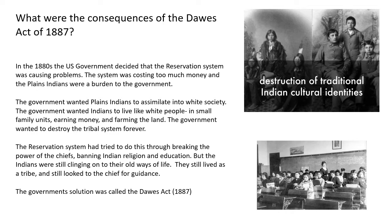But the Indians were still clinging on to their own way of life. They still lived as a tribe and still looked to the chief for guidance. So the reservation system was costing too much money and wasn't achieving its stated aim — that is, to assimilate the Native Americans into white culture and get rid of them as a problem forever. They were no longer a nation within; they were just assimilated into white society and became US citizens, albeit second class citizens, looked down upon by white people. So just make a brief copy of that introduction or change it into your own words, either bullet points or a summary paragraph.